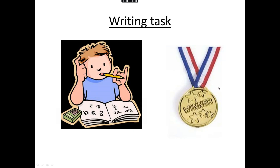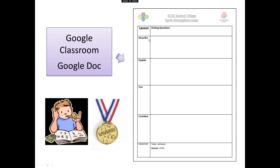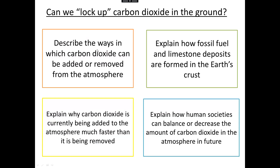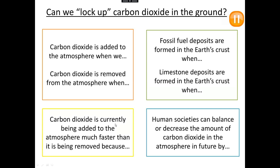It is time for the writing task. Go to the Google Classroom and find the Google Doc for lesson four. It already has the driving question, and it already has describe, explain, use, combine — even some sentence starters. Open the first assignment, which is the Google Doc exercise book, scroll through and find lesson four. You are going to be describing the ways carbon dioxide could be added or removed, explaining how fossil fuel and limestone are formed, and using your understanding to explain why carbon dioxide is currently being added to the atmosphere much faster than it is being removed, and how we as a society can balance or decrease the amount of carbon dioxide. Pause the video, write your notes into your Google Doc exercise book, then come back to this video to find the answers afterwards.